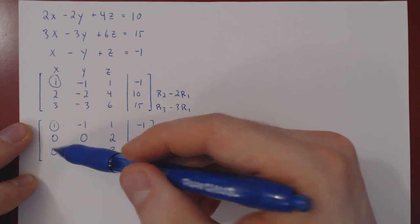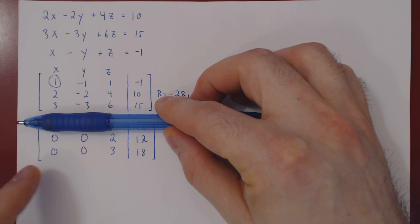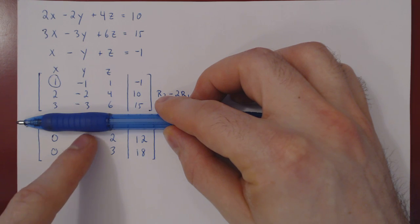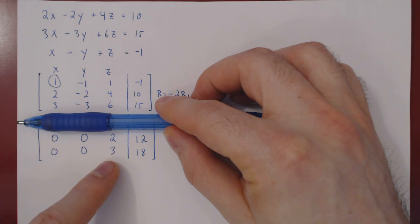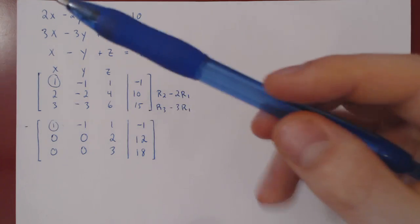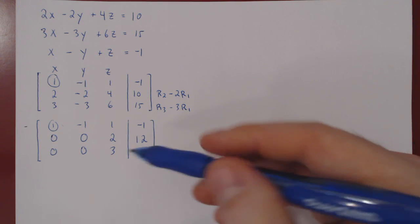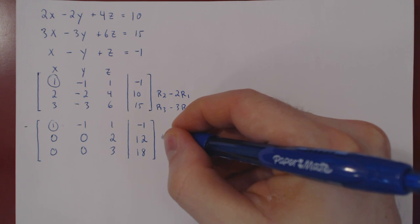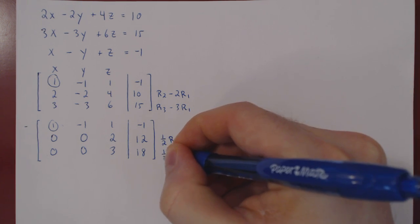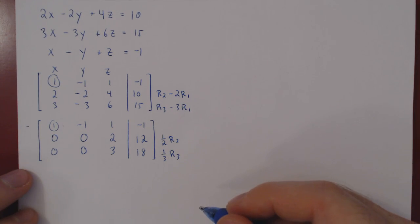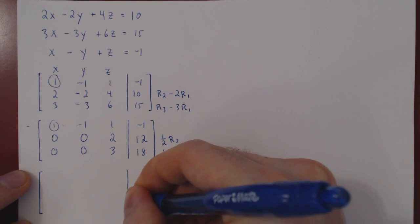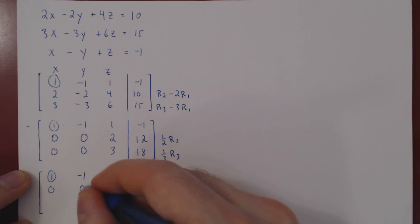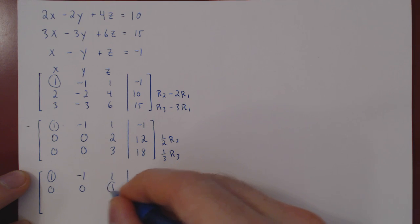We have killed the entries below the first leading one, so we ignore that row and move on. Starting from the leftmost column, both entries are zero — we can't get a leading one there. Both entries in the next column are also zero. But the entries in the last column are non-zero, so we can easily get a leading one in the top row. We multiply row two by one-half and row three by one-third to make the calculation slightly easier.